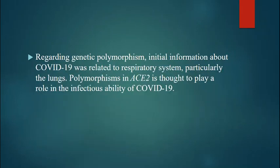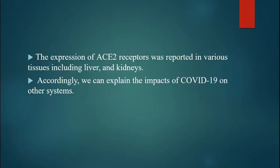Regarding genetic polymorphism, initial information about COVID-19 was related to the respiratory system, particularly the lungs. Polymorphisms in the gene ACE2 are thought to play a role in the infectious liability of COVID-19. The expression of the ACE2 receptor was reported in various tissues including liver and kidney, and accordingly we can explain the impacts of COVID-19 on other systems.